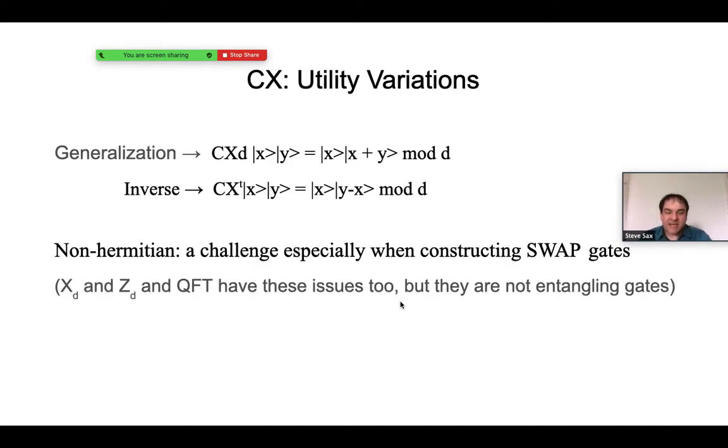Now looking at gates that in a Qudit environment can manifest in different variations, let's look at the control shift gate. The generalized form, similar to the CNOT gate, does addition, only it's modulo d instead of just modulo 2. Notice that the inverse is not the same as the original gate, so it's a non-Hermitian gate.